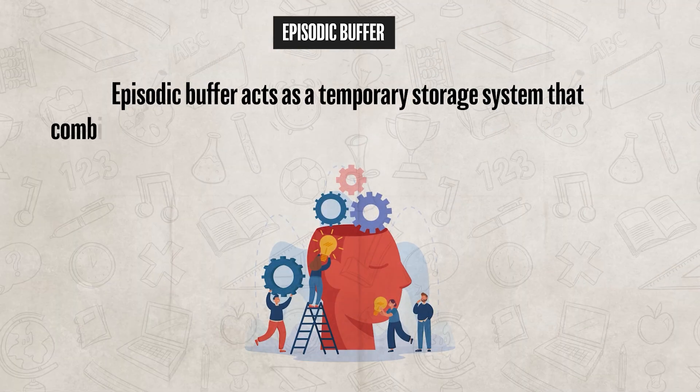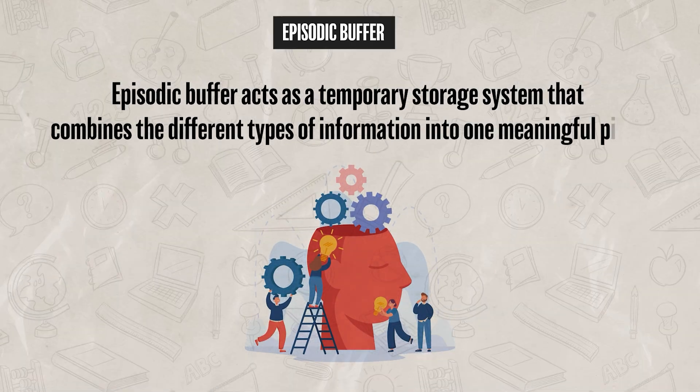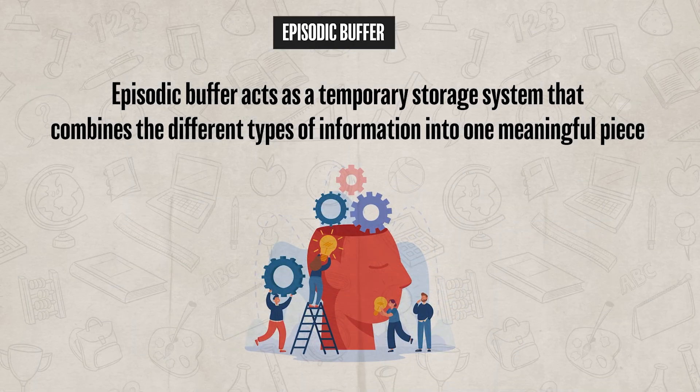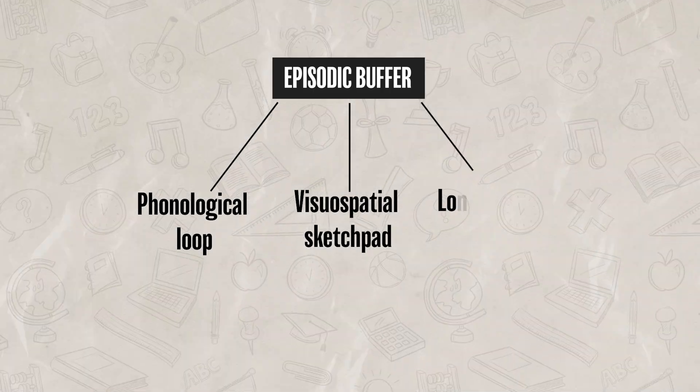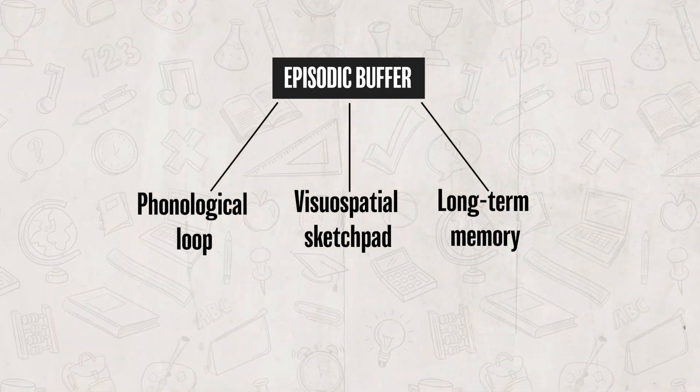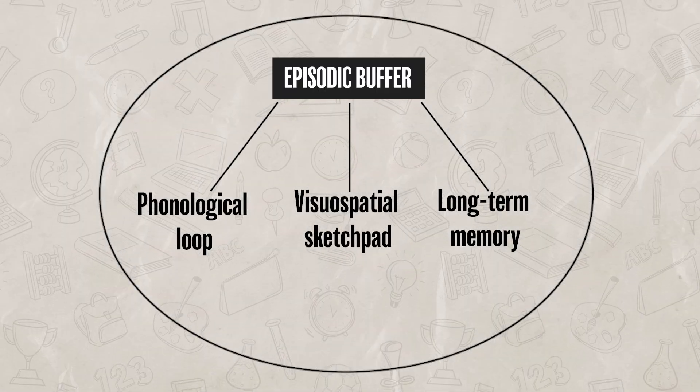Since this model was created, it has been updated with the addition of the episodic buffer. This change helped fill in the gaps that the original model had. The episodic buffer acts as a temporary storage system that combines the different types of information into one meaningful piece. This explains how long-term memory integrates with working memory, and how different types of information — such as sounds and visuals — are combined. Information from the phonological loop, visual-spatial sketchpad, and long-term memory are brought together here and formed into a cohesive sequence.